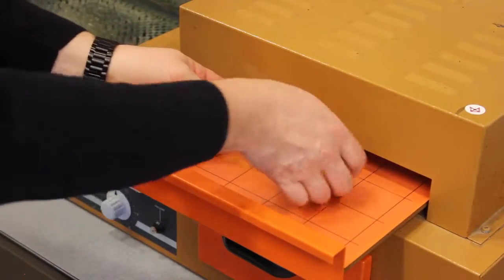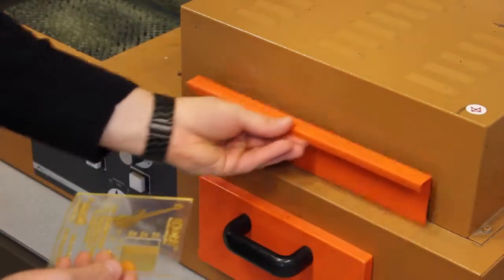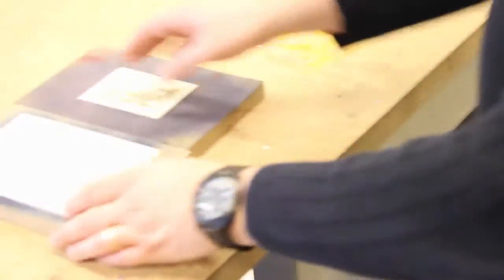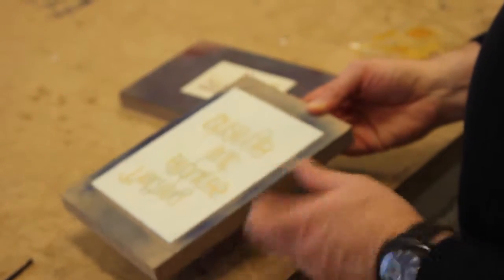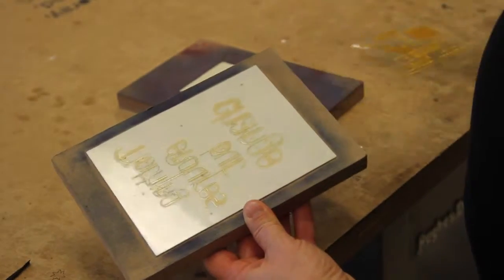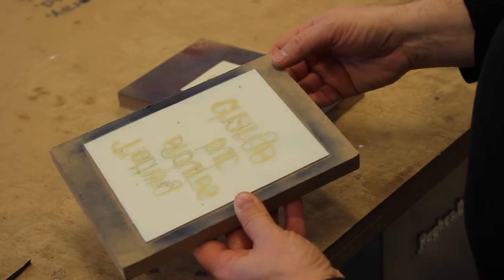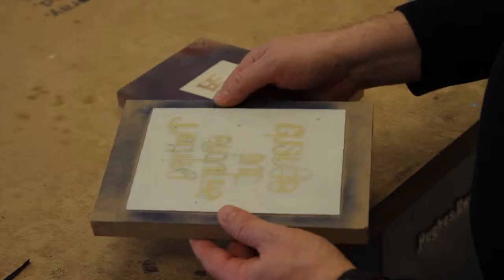All right, now that the three minutes have passed we can turn the lights off and remove our polymer plate. This is now ready to be mounted with double-sided tape. We can see some examples here of how a polymer plate has been mounted to three quarter inch MDF with double-sided tape. This is ready to go to the letterpress and be printed with our rubber-based inks.